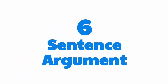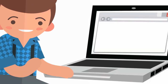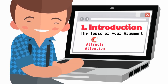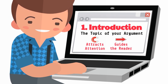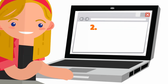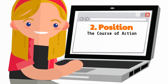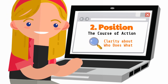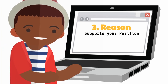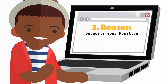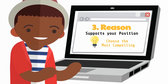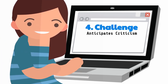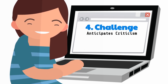You can do this with a Six Sentence Argument, or 6SA. Your introduction presents the topic of your argument — this attracts the reader's attention and guides them to your decision situation. Your position states the course of action for which you decide to argue, with clarity about who does what. Your reason supports your position; choose the most compelling reason that you can express in one sentence. Your challenge anticipates the most relevant point of criticism that the reader might voice about your reason.